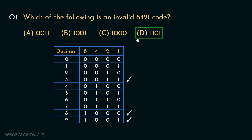So clearly this is an invalid 8421 code. We can also determine the correct answer without taking help from the chart, but for that we will have to memorize the sequence order. The encoding for 8421 for the symbols 0 to 9 is actually similar to the unsigned binary ones. So if we derive all the patterns from 0 to 9, that is up to 1001, anything bigger than 1001 will be an invalid 8421 code. Keeping that in mind, we can easily find out that option D is an invalid 8421 code.